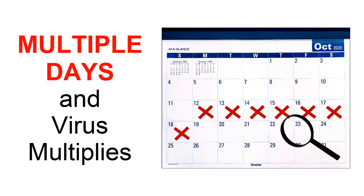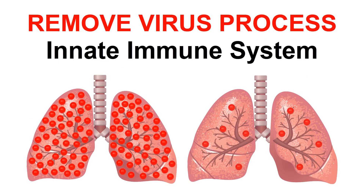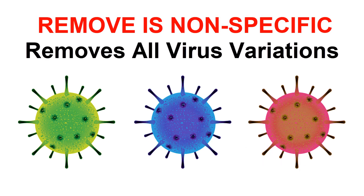This can take multiple days, during which time the virus multiplies. Your body has two immune systems: the innate and acquired immune system. The remove-virus process is part of your innate immune system. The attack-virus process is part of your acquired immune system.